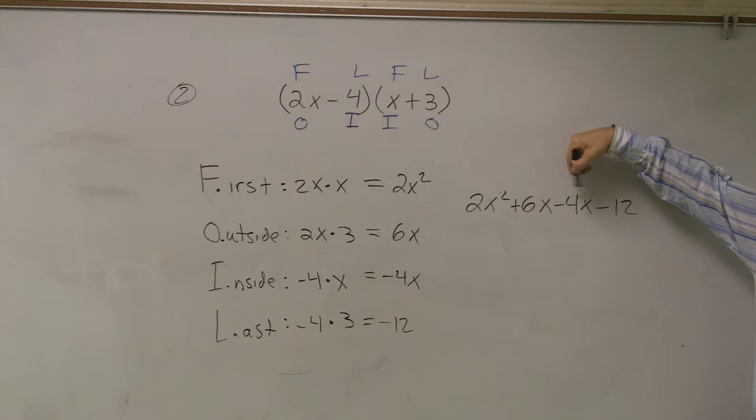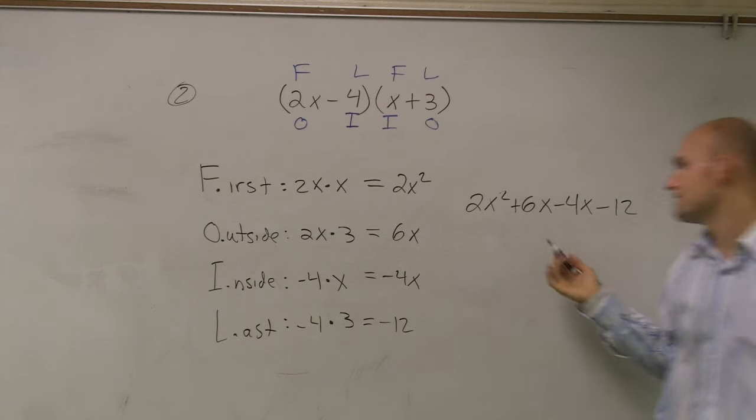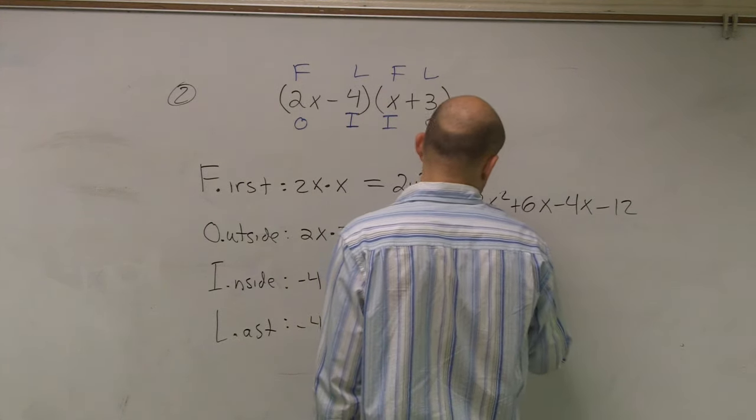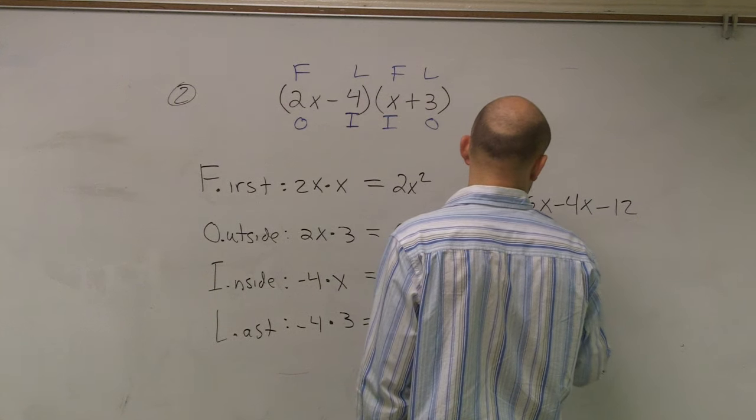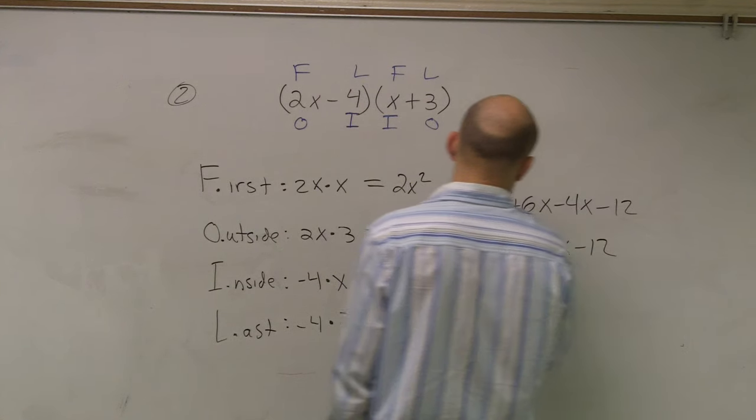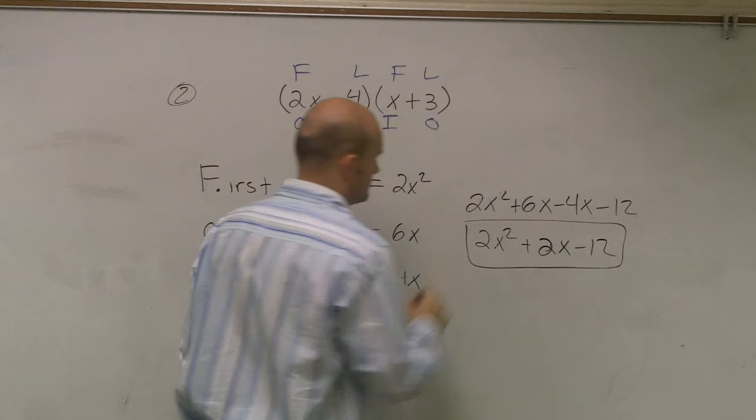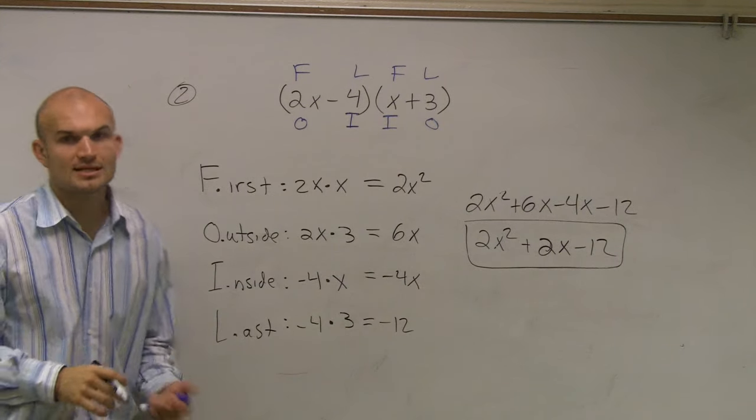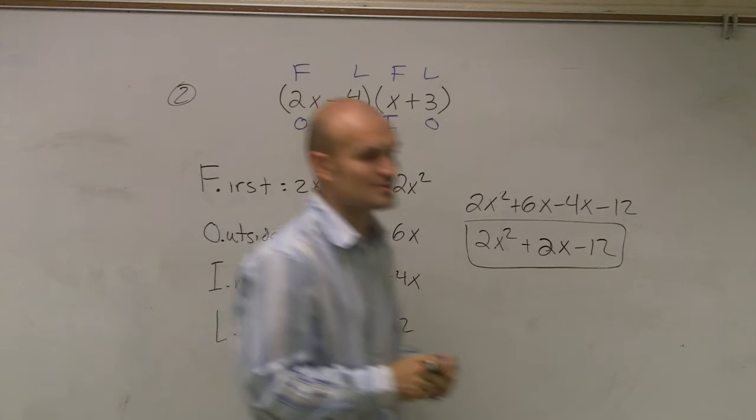Then, can I combine these two? Yeah. So I get 2x squared plus 2x minus 12. And there you go. That's another way to multiply two binomials.